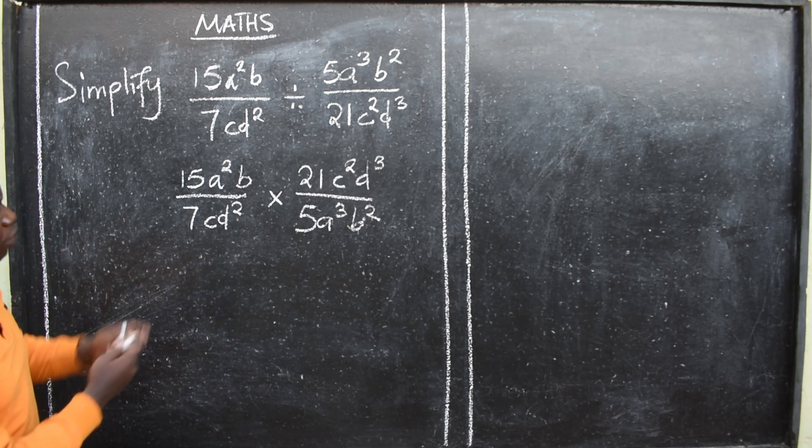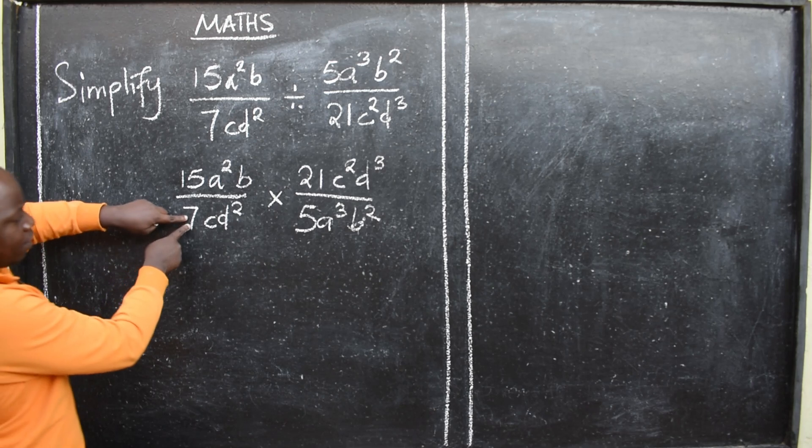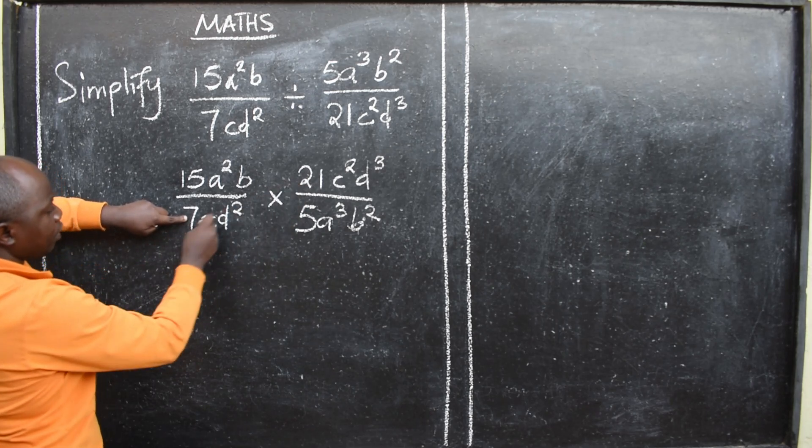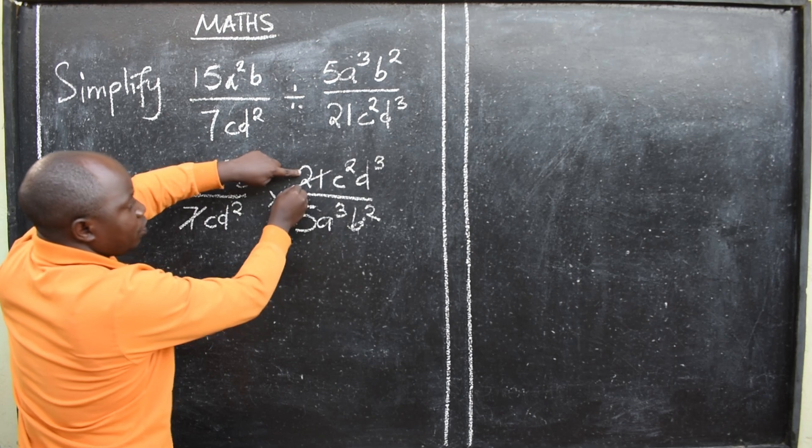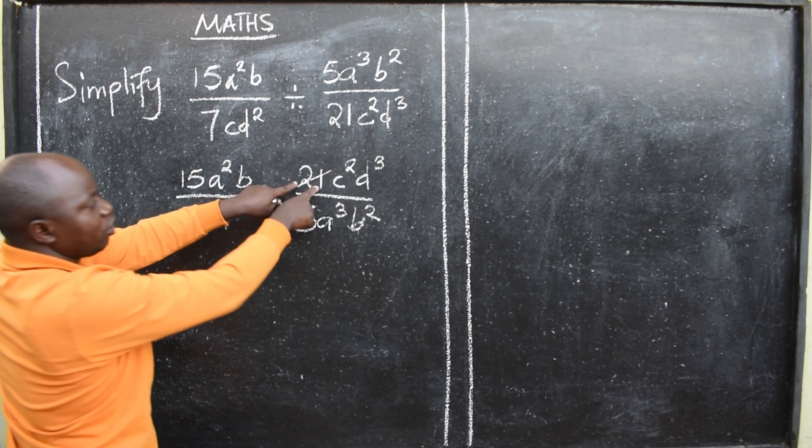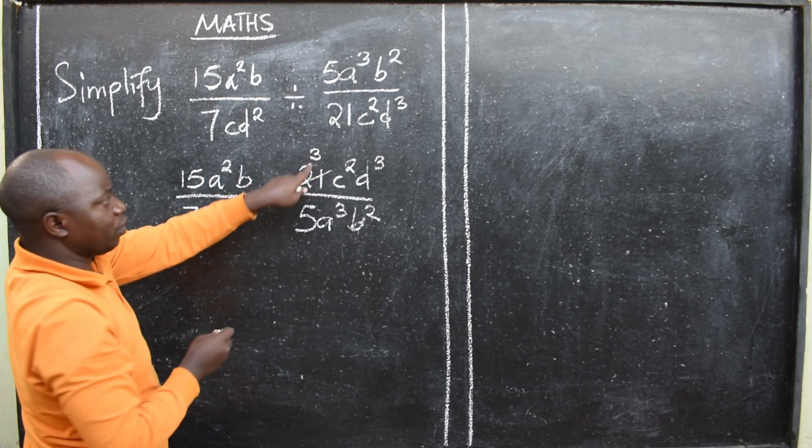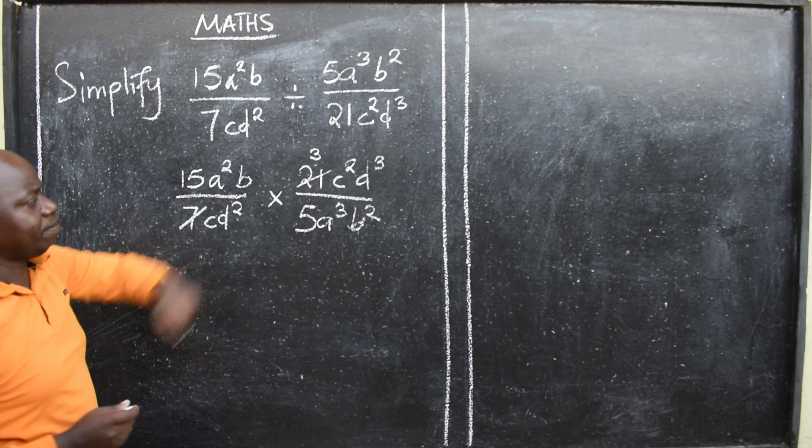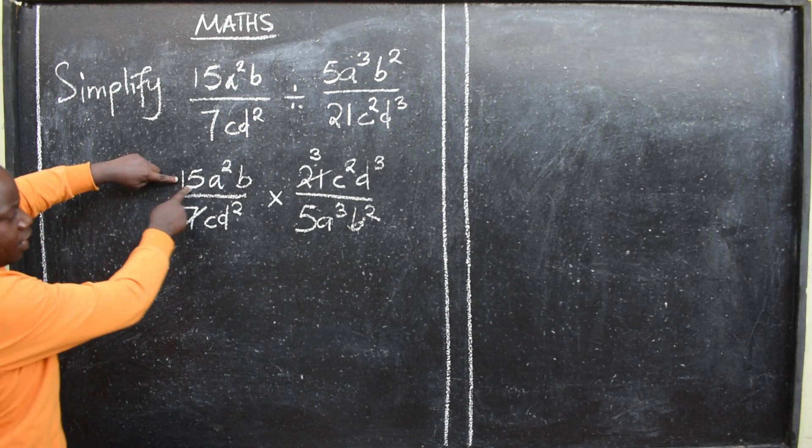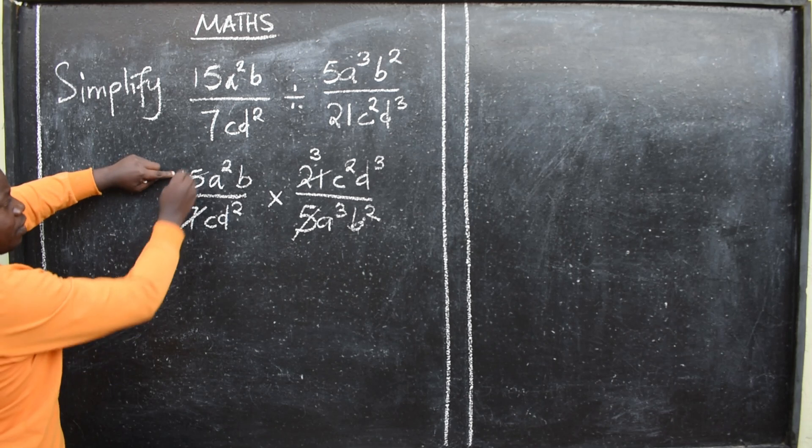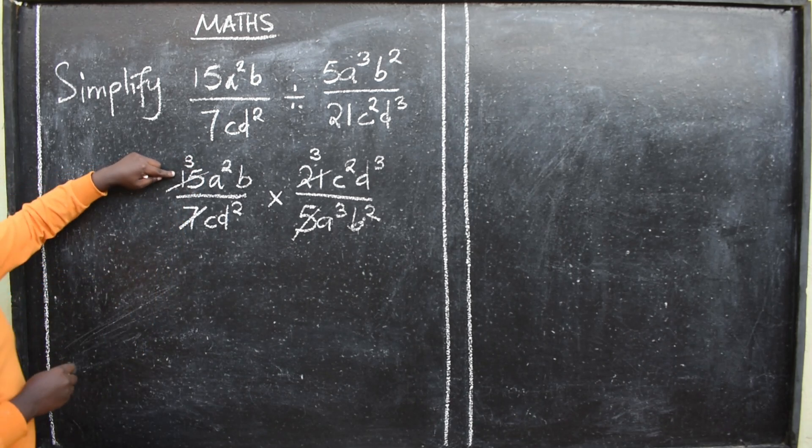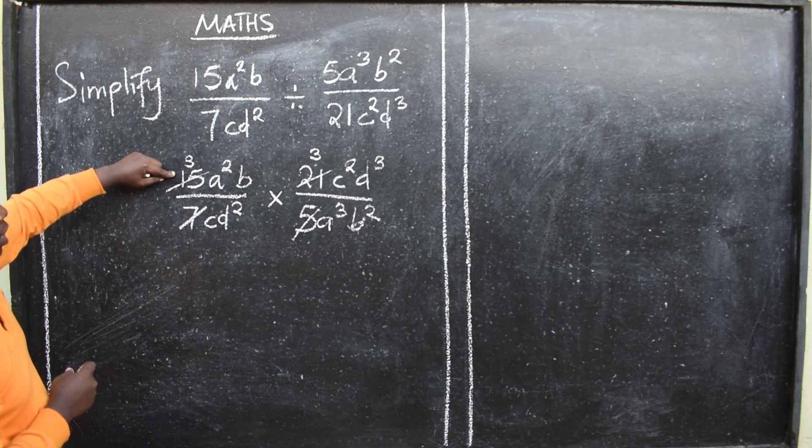So let's start with numbers. I have a 7 and 21. So I can cancel this 7 and this 21. How many 7s are in 21? There are 3. So here, I have remained with a 3. I have a 15 and a 5 here. Cancel. They will be able to have a 3.